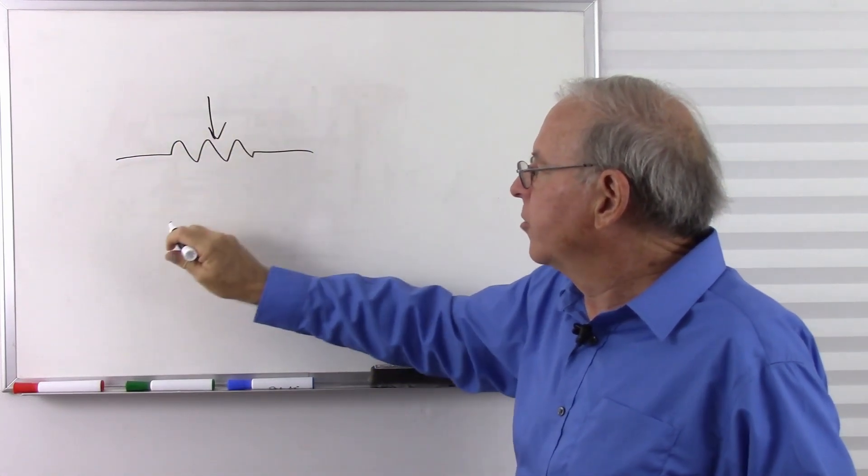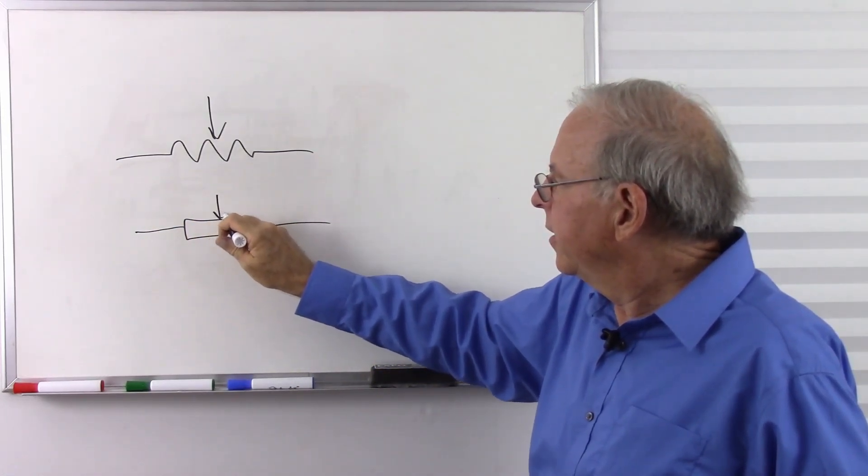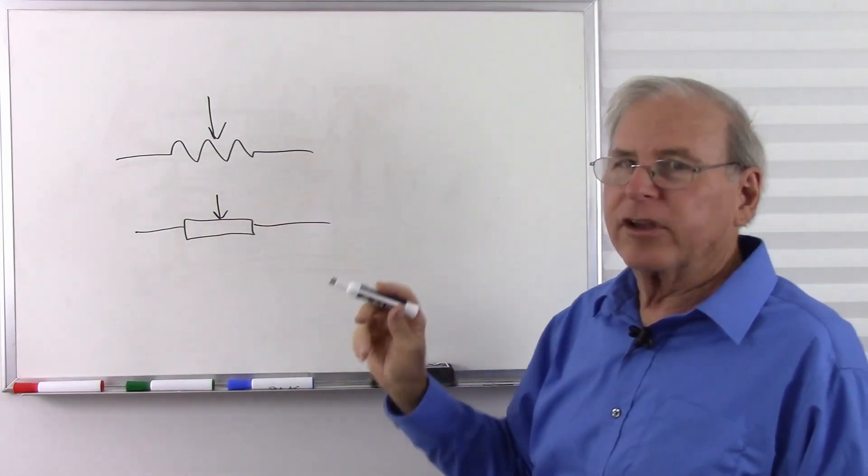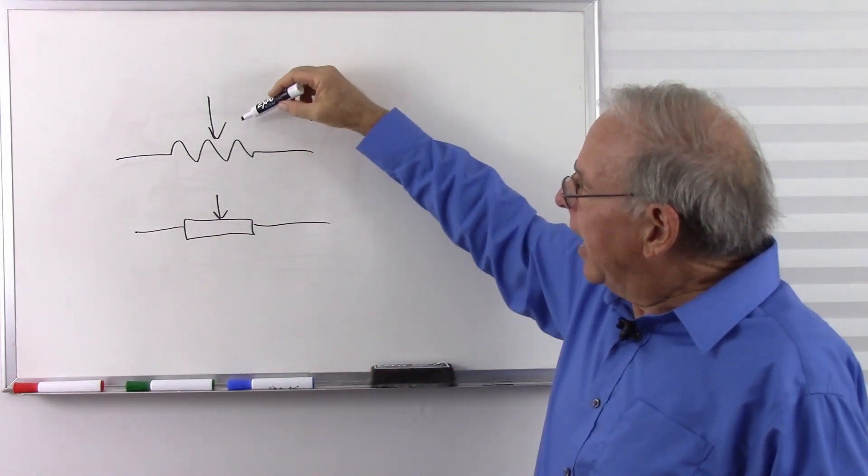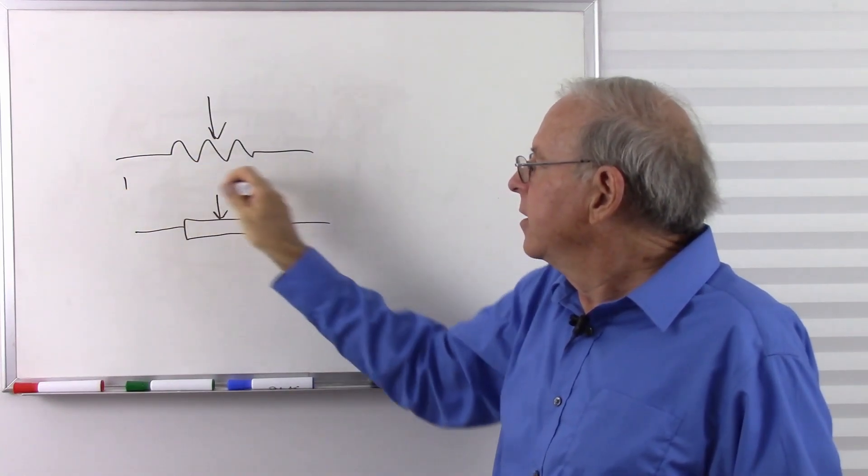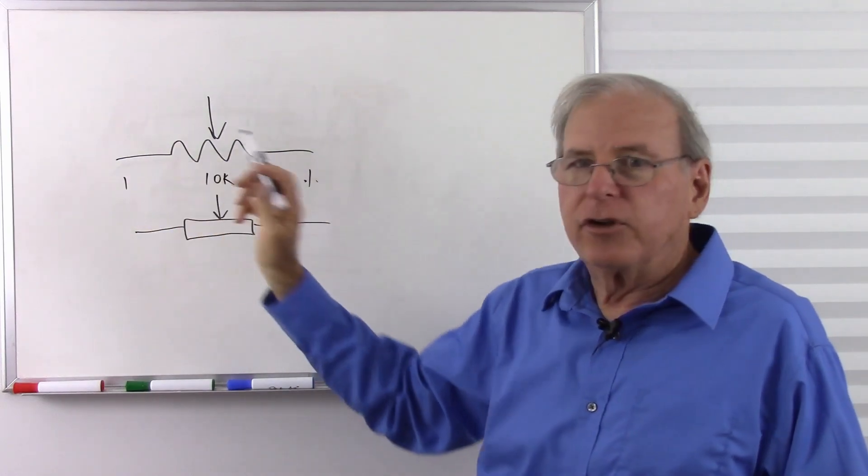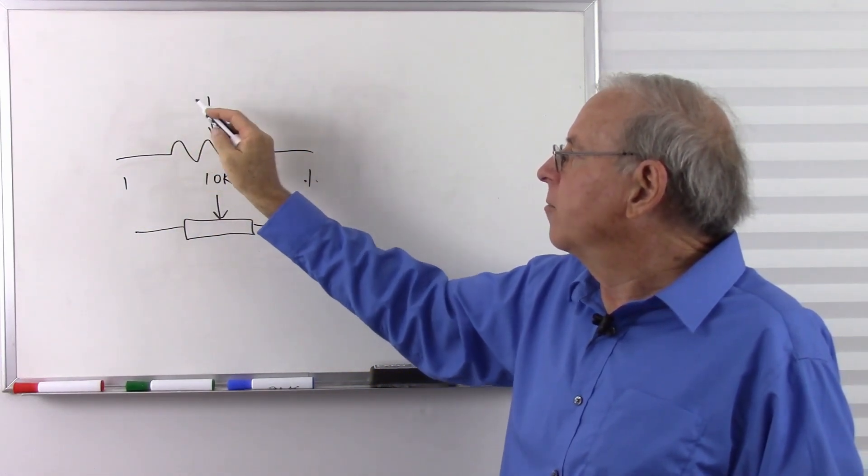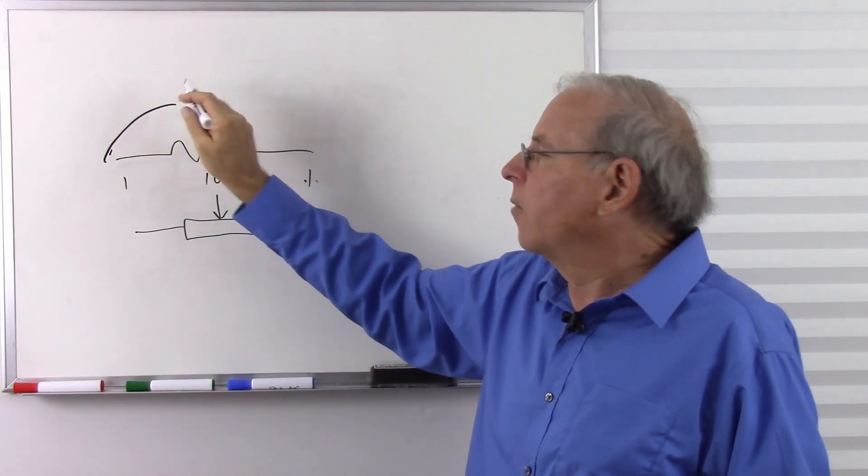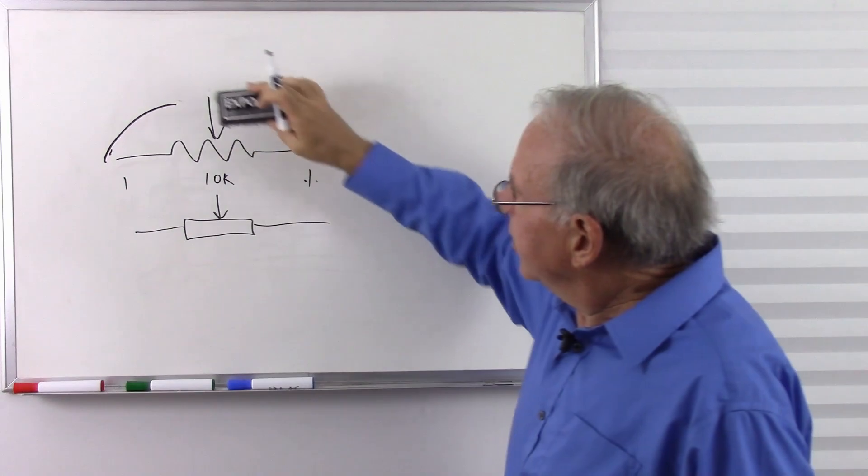Let's make the symbol for a potentiometer. There's the typical American symbol. European. Pretty much the same thing, just we like the zigzag here in the States. And this represents the wiper that moves back and forth. So if we have a 10k potentiometer, we measure between the two ends, we get 10,000 ohms. But if we measure between an end and the wiper, we get whatever the wiper is set at. So there's your potentiometer.